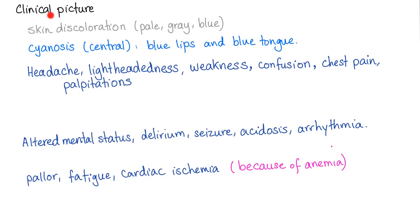Clinical picture: skin discoloration — pale, gray, blue, or dusky. Central cyanosis — blue lips and blue tongue. Headache, lightheadedness, weakness, confusion, chest pain, palpitations, altered mental status, delirium, seizure, acidosis, arrhythmia, pallor, fatigue, and cardiac ischemia — all because of functional anemia.